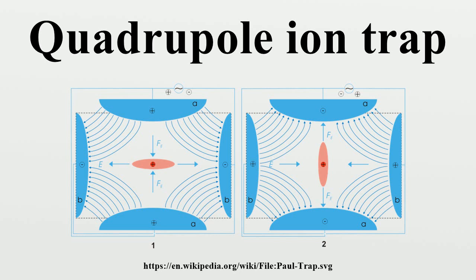There are two main classes of traps, depending on whether the oscillating field provides confinement in three or two dimensions. In the two-dimension case, confinement in the third direction is provided by static electric fields. The 3D trap itself generally consists of two hyperbolic metal electrodes with their foci facing each other and a hyperbolic ring electrode halfway between the other two electrodes.